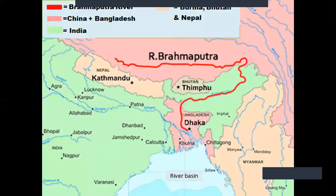Brahmaputra River. As you can see in the image, the Brahmaputra River originates from the northern side of the Himalayas and flows across southern Tibet, then enters India through Arunachal Pradesh. It flows south-west through the Assam Valley and enters Bangladesh, where it is known as River Jamuna, before emptying into the Bay of Bengal.